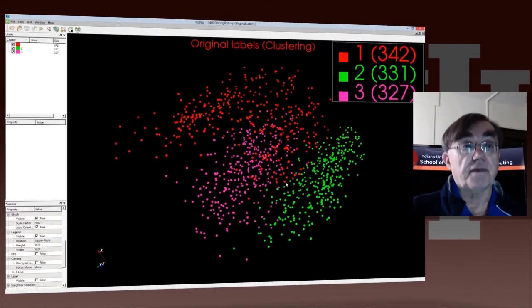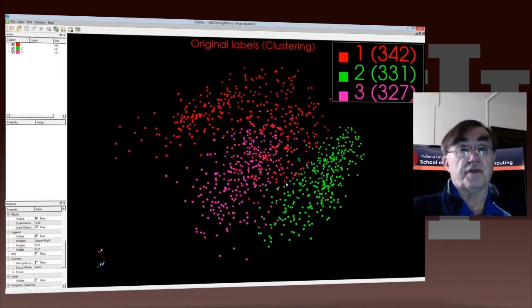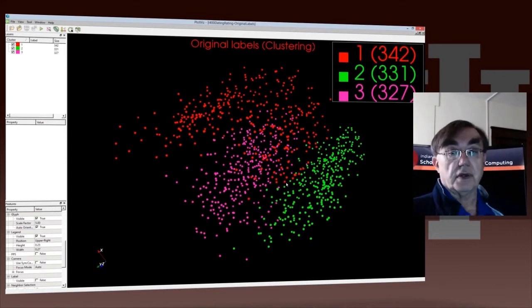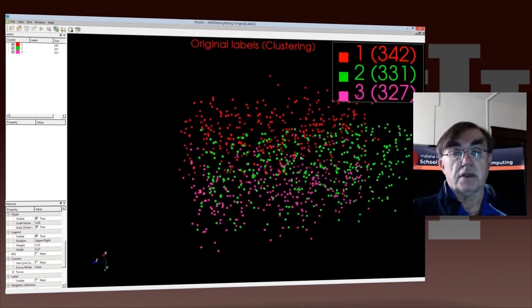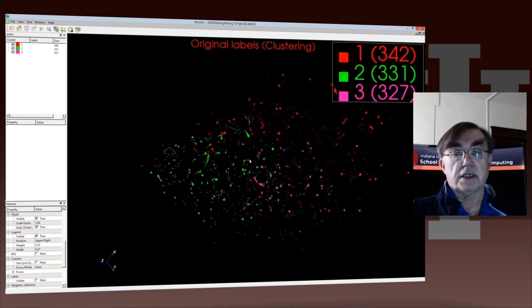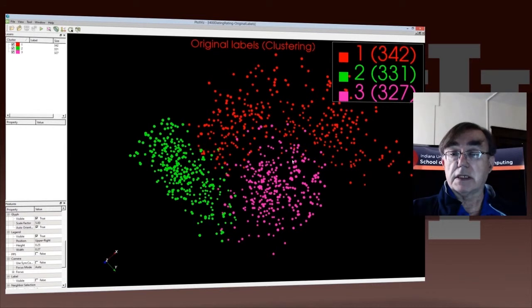All right, so here we have this three-dimensional plotter, PlotViz. It's got exactly these thousand points with 342, 331, and 327 points in each collection. If I move my mouse around, I can rotate this section. You can see, depending on how I look at it, like here, it's very clean.